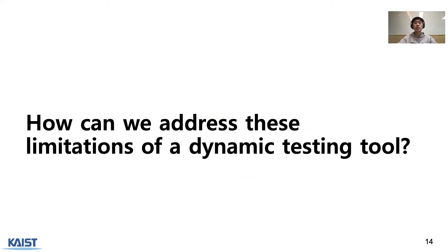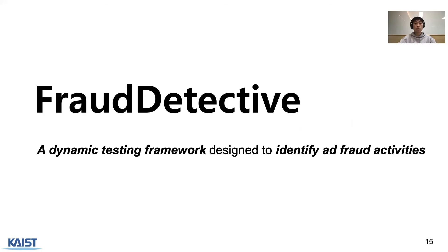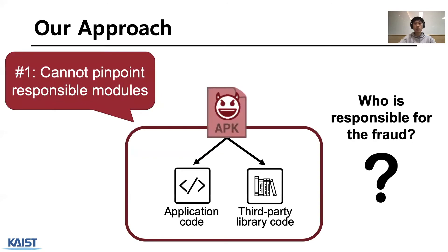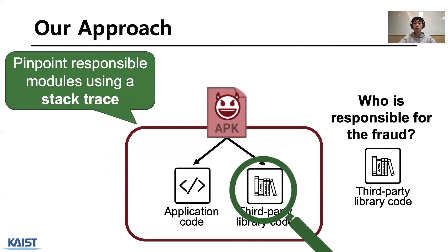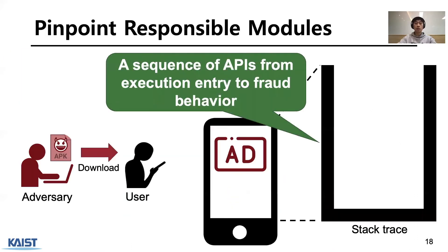Based on these three limitations, we propose Fraudetective — a new dynamic testing framework for mobile ad fraud detection that identifies ad fraud activities with their causal relationships. I will explain how Fraudetective addresses the challenges from previous works. The first challenge is pinpointing responsible modules. Fraudetective can pinpoint the ad module responsible for observed fraud activities using Stacktrace information — a report of the API call sequence at a certain point during program execution.